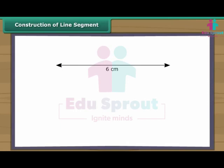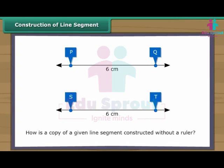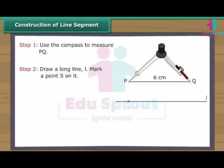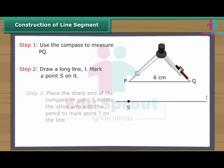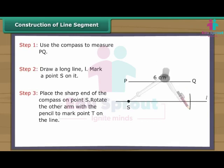Suppose a six centimetre long line segment PQ is given. We want to create another line segment ST of the same measurement. How do we do it without using a ruler? Use the compass to measure PQ. Draw a long line L. Mark a point S on it. Place the sharp end of the compass on point S. Rotate the other arm with the pencil to mark point T on the same line. We have a line segment ST which is a copy of the line segment PQ.